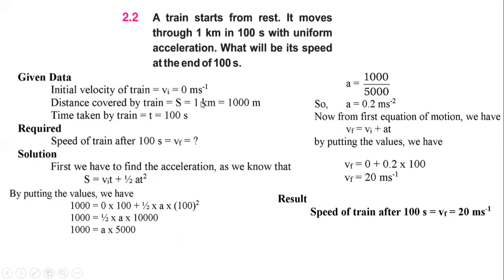Now we have acceleration, initial velocity, distance, and time — four parameters. We evaluate the final velocity using the first equation of motion: VF = VI + at. VI is 0, A is 0.2, and time is 100. Multiplying and adding gives VF = 20 meters per second. The result is: the speed of the train after 100 seconds is 20 meters per second.